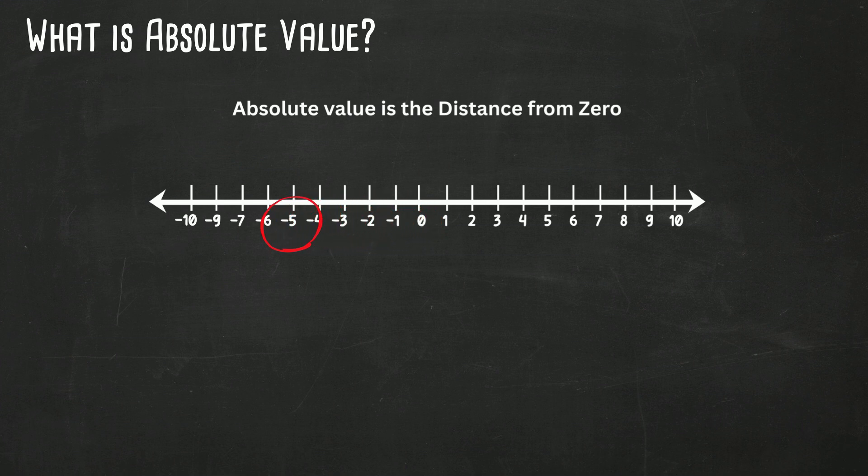Let's look at negative five. Even though it's on the left side of zero, it's still five units away. One, two, three, four, five. So yes, the absolute value of negative five is also five.